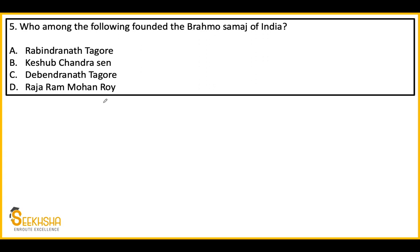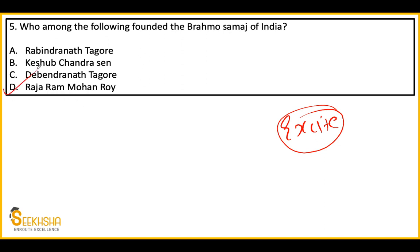Next question: who among the following founded the Brahmo Samaj of India? Options: A. Rabindranath Tagore, B. Keshav Chandra Sen, C. Debendranath Tagore, D. Raja Ram Mohan Roy. Many students get excited seeing this question and quickly select D — Raja Ram Mohan Roy — because they know he founded Brahmo Samaj. But be careful — Brahmo Samaj and Brahmo Samaj of India are two different things. Don't fall into that trap.